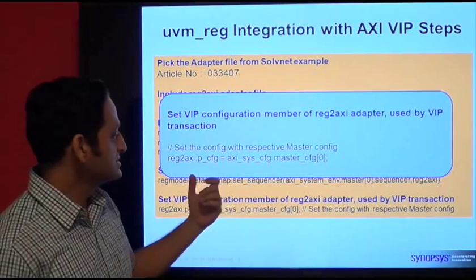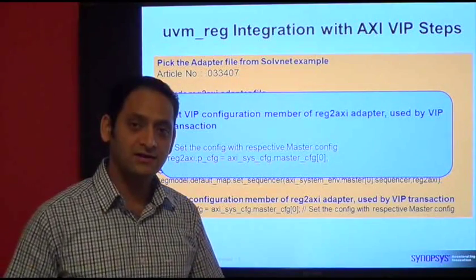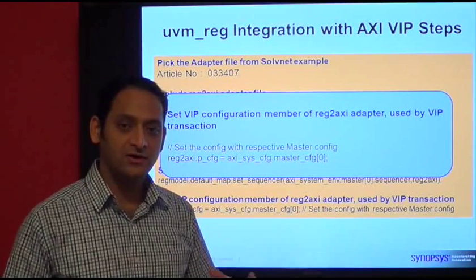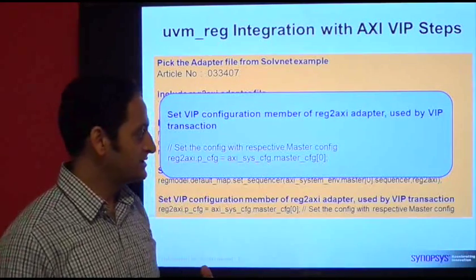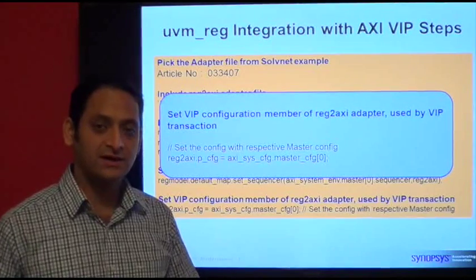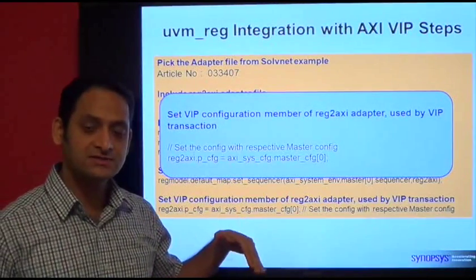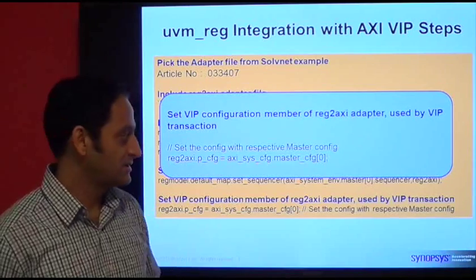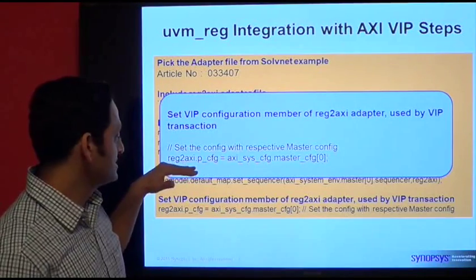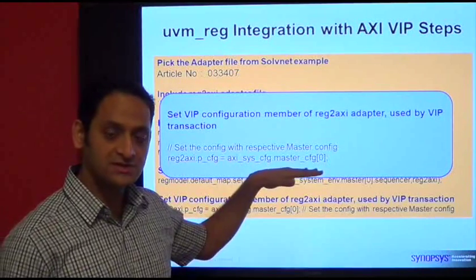The VIP also requires the user to pass the right configuration handle within the transaction, so that whenever a transaction is randomized it keeps all the transaction fields within the configuration bounds — which are basically the characteristics of the DUT. The adapter layer also expects the master configuration to be passed, and this step shows how to do that: through the object dot configuration member, you assign the specific master configuration handle.